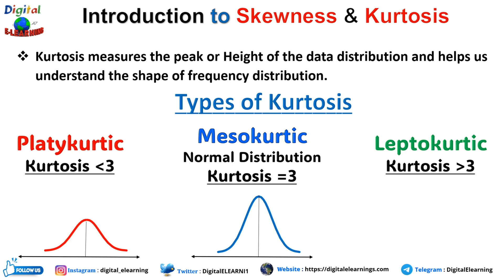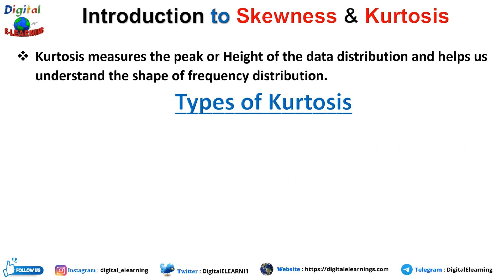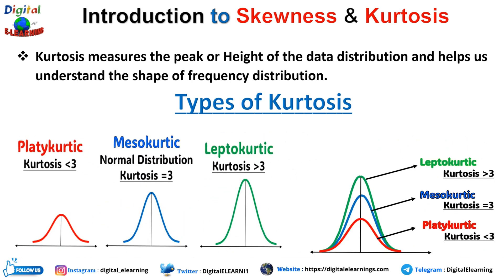Last but not least is leptokurtic. In this case, the curve has more peak than the normal distribution, and the kurtosis value is greater than 3. So to summarize: kurtosis value of 3 is normal distribution; less than 3 is platykurtic; more than 3 is leptokurtic. Now if we merge all three together into one graph, this is how it will look. If the data represents a sharp mountain peak, it is leptokurtic. If it is more flat, it is platykurtic. If it is somewhere in between, it is mesokurtic — the normal distribution.